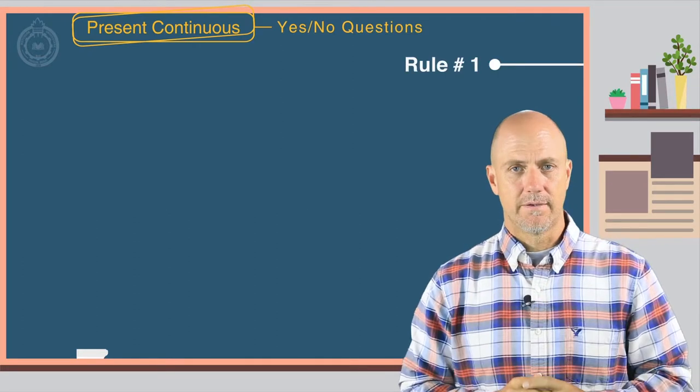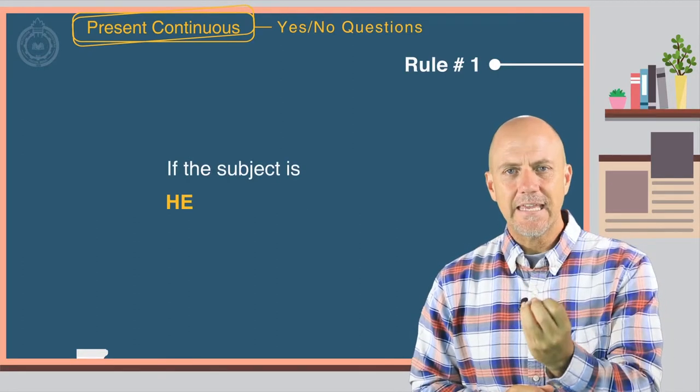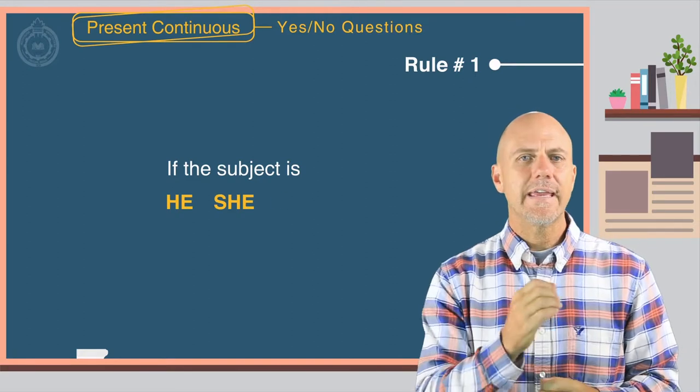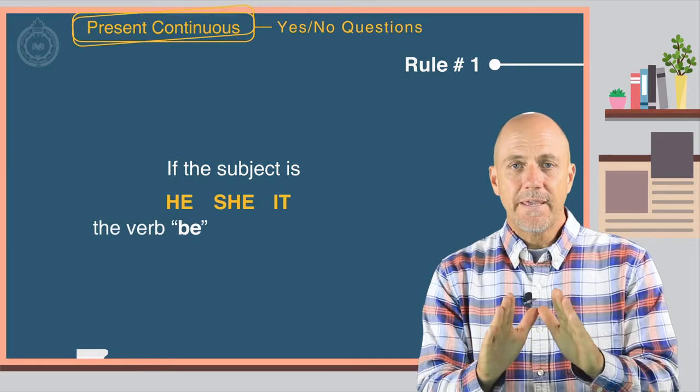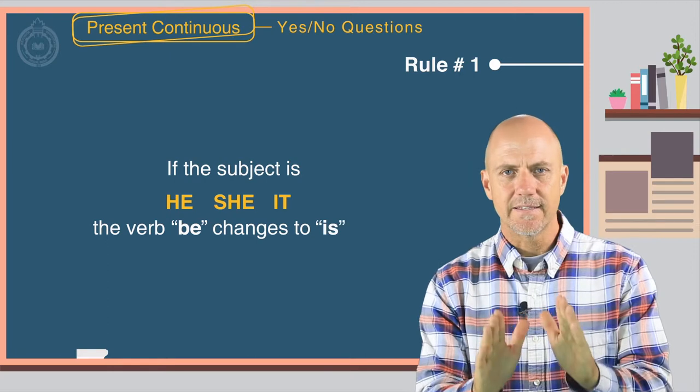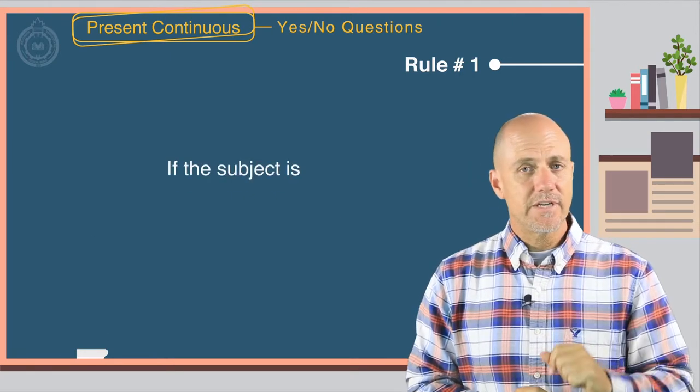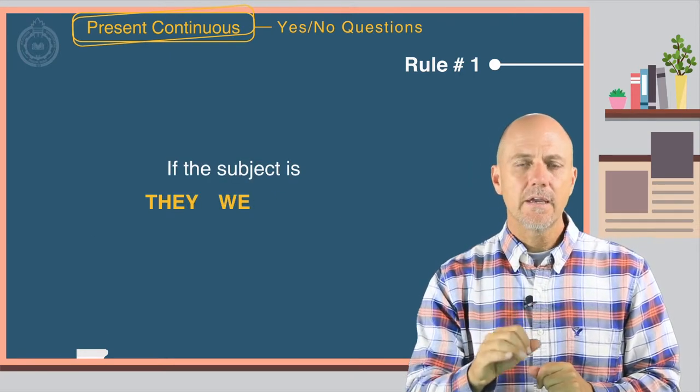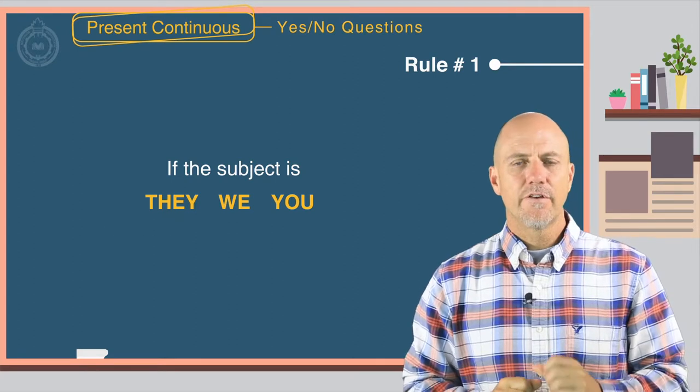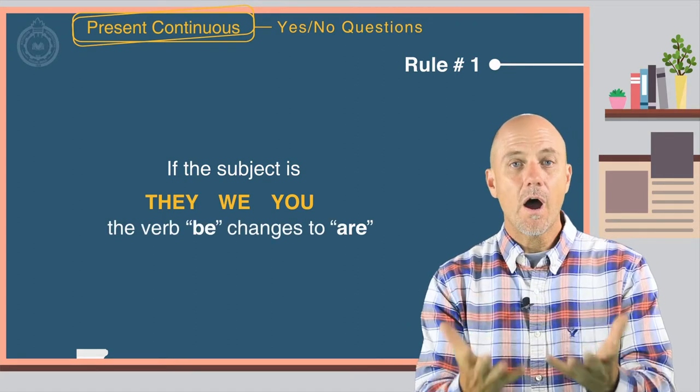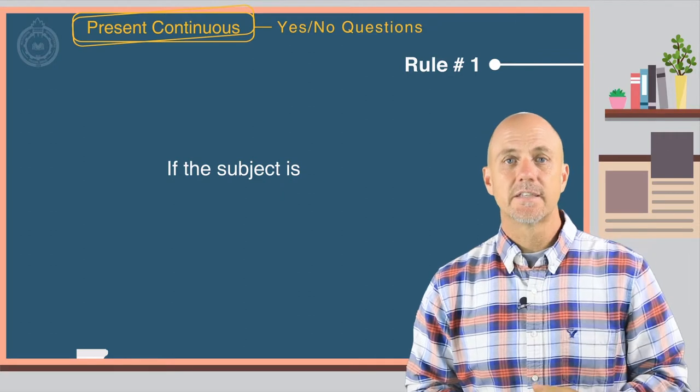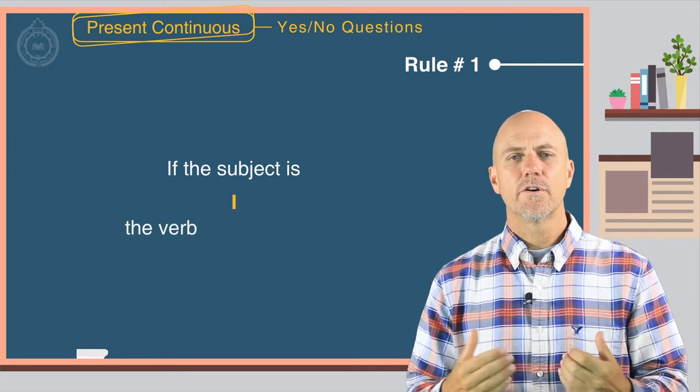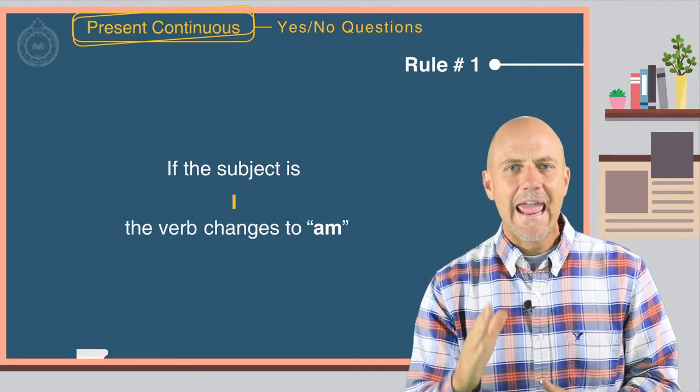Rule number one. If the subject is he, she, or it, the verb be changes to is. If the subject is they, we, or you, the verb be changes to are. If the subject is I, the verb changes to am.